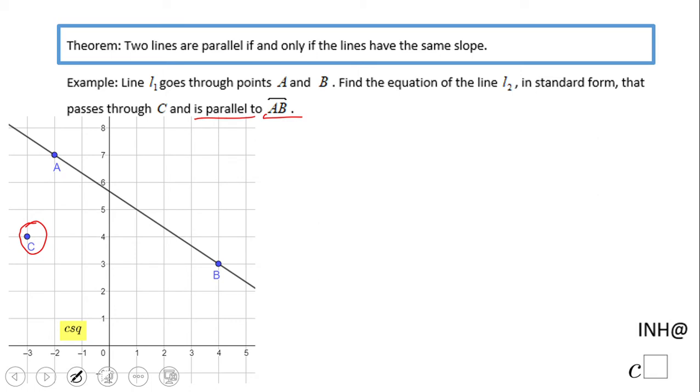First of all, we're going to need to find the slope of the line that goes through points A and B. Since we have a graph, the easy way is to draw a slope triangle. The rise is 1, 2, 3, 4.